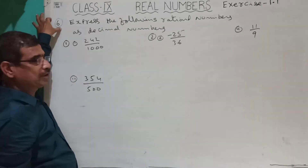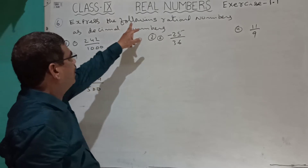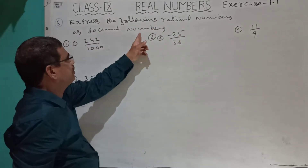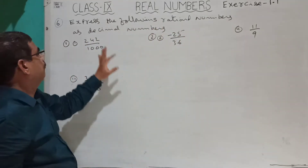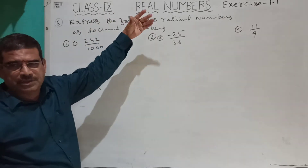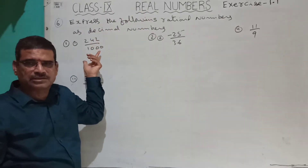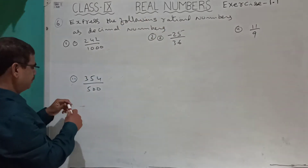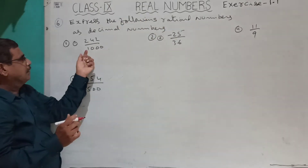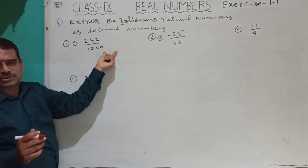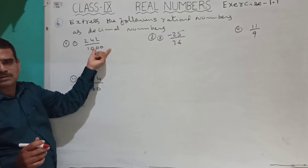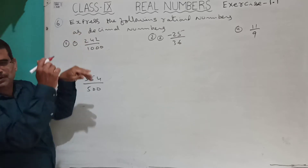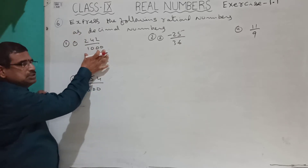Next question, the sixth one: express the following rational numbers as decimal numbers. We have to convert fractions into decimals. For the first question, there are three zeros in the denominator, so after three decimal places we put the point — this is an easy method.